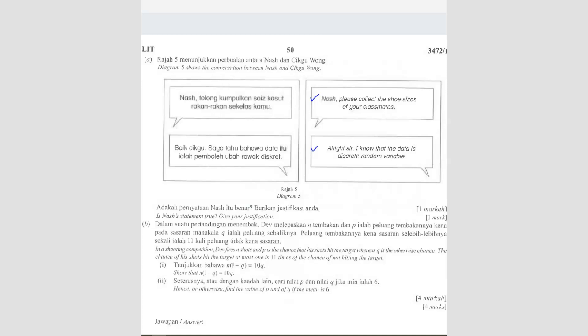But I think what this question is trying to say is that you won't see a shoe size that is, for example, 6.324, you know? You're not going to see this kind of size. Or 7.216, you're not going to see this. It's either 6, 6.5, 7, 7.5, 8, 8.5 and so on, correct?